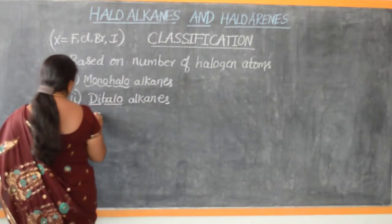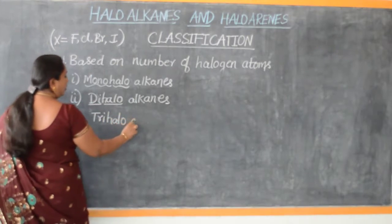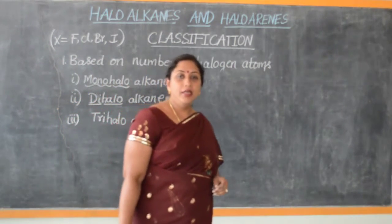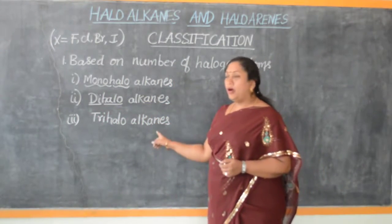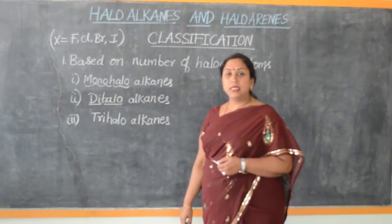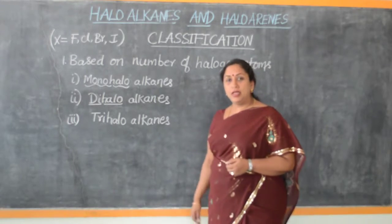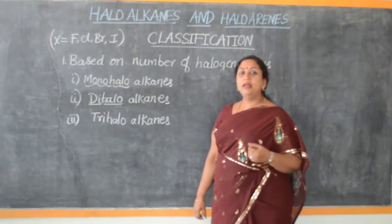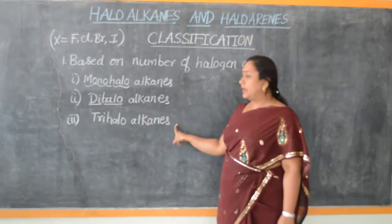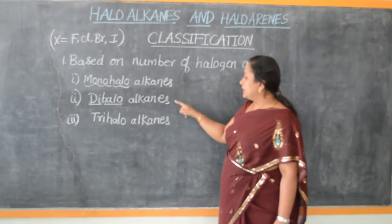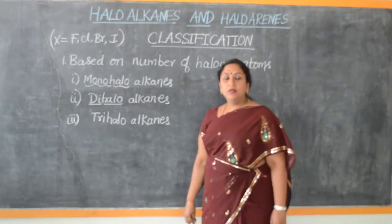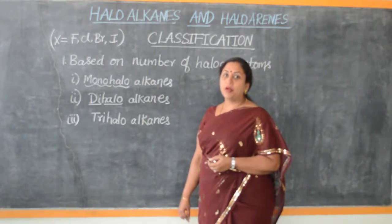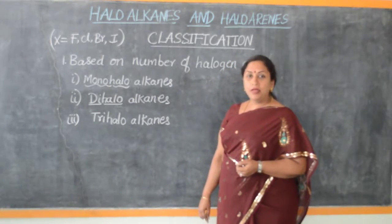Now let us learn about trihalo alkanes. They are the organic compounds which contain three halogen atoms in the same compound. If more than three halogen atoms are present in the same organic compound, we call them polyhalo alkanes. Up to three, we call them by individual names: monohalo alkanes, dihalo alkanes, and trihalo alkanes.